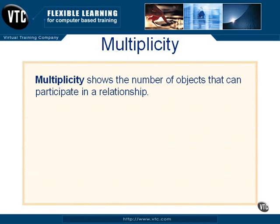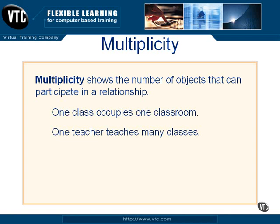One other concept to consider in terms of relationships is multiplicity. Multiplicity shows the number of objects that can participate in a relationship — specifically, how many objects may be associated with each other. Using schools as examples: one class occupies one classroom, which is a one-to-one relationship; one teacher teaches many classes, which is a one-to-many relationship.